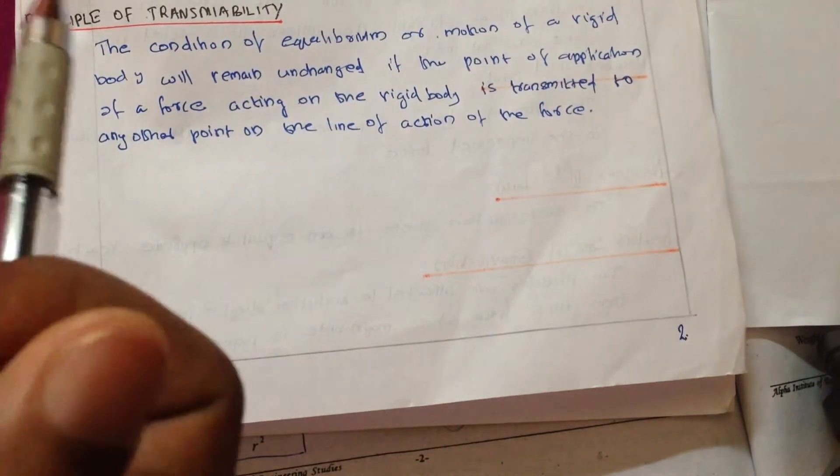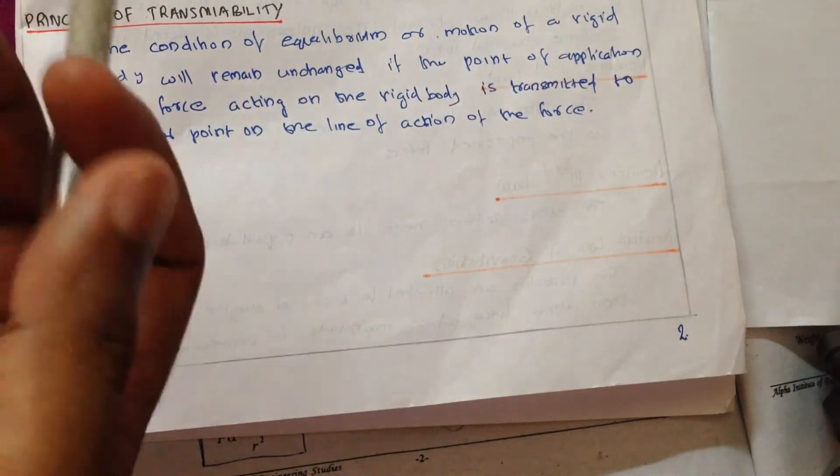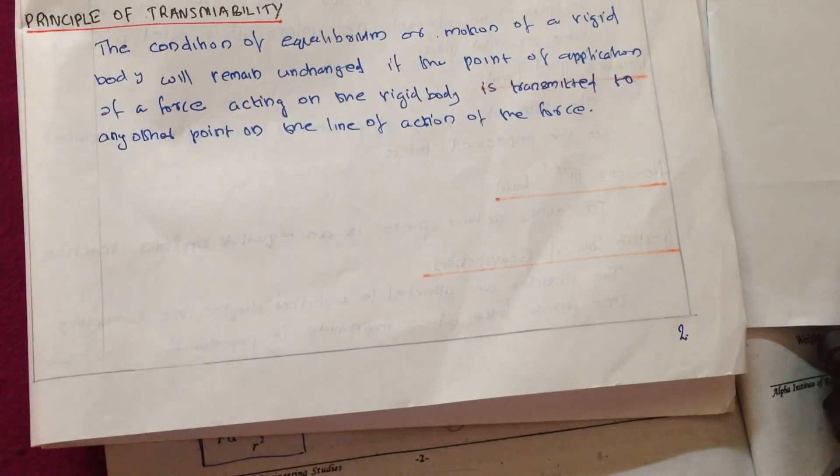It means the point of application where the force is acting - if you change that point, then the equilibrium or motion of a rigid body will change; otherwise it will remain unchanged. That is what the Principle of Transmissibility tells.